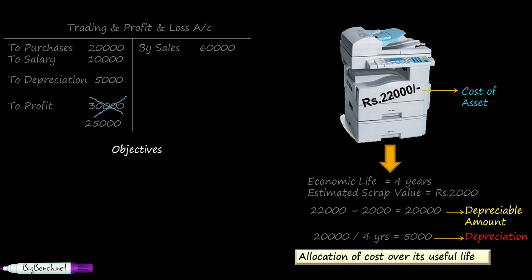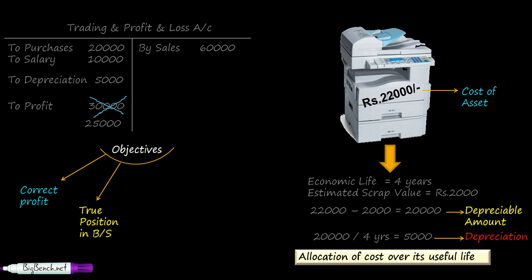So what are the objectives achieved by doing all this? First, correct profit. By charging depreciation on the debit side of the trading and profit and loss account, we arrive at the correct amount of profit — otherwise we would show profit at 30,000, but now we show a more accurate profit of 25,000. Next, true position in the balance sheet. We bought the asset for 22,000; after charging depreciation, we show 22,000 minus 5,000 as the value in the balance sheet for the photocopy machine, reflecting its true position.